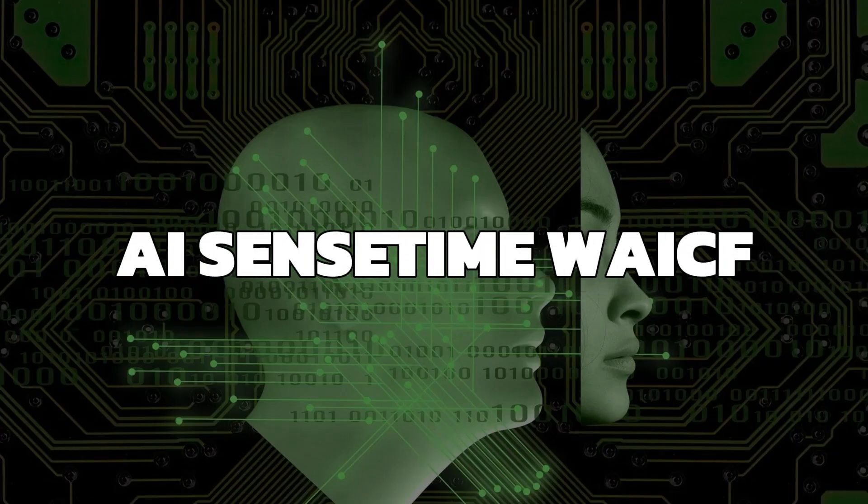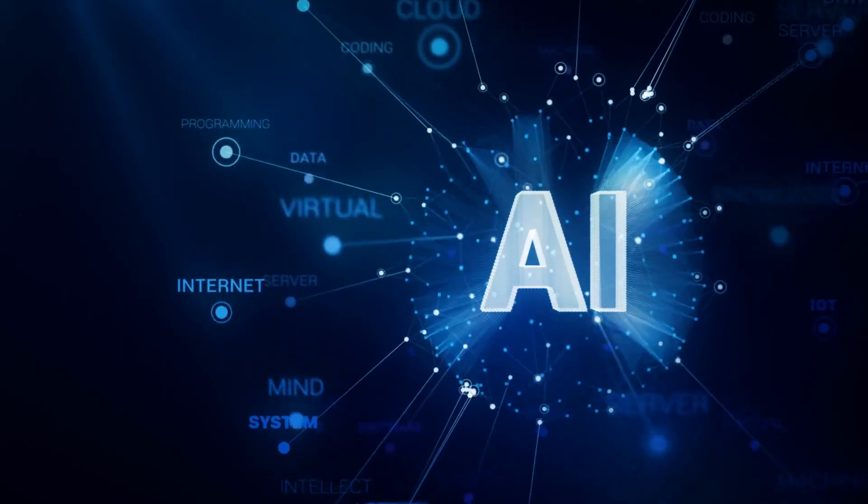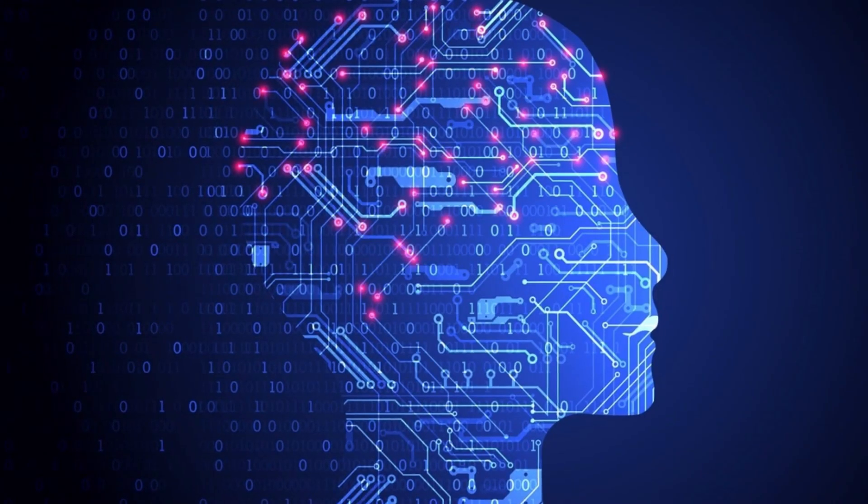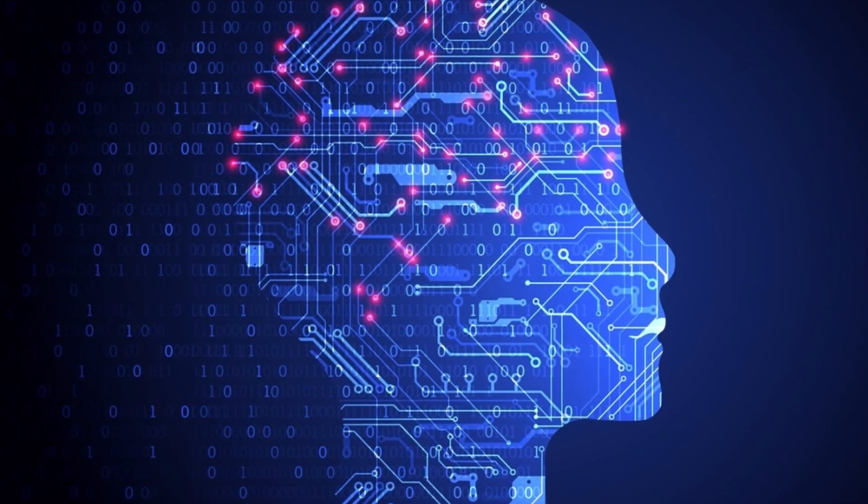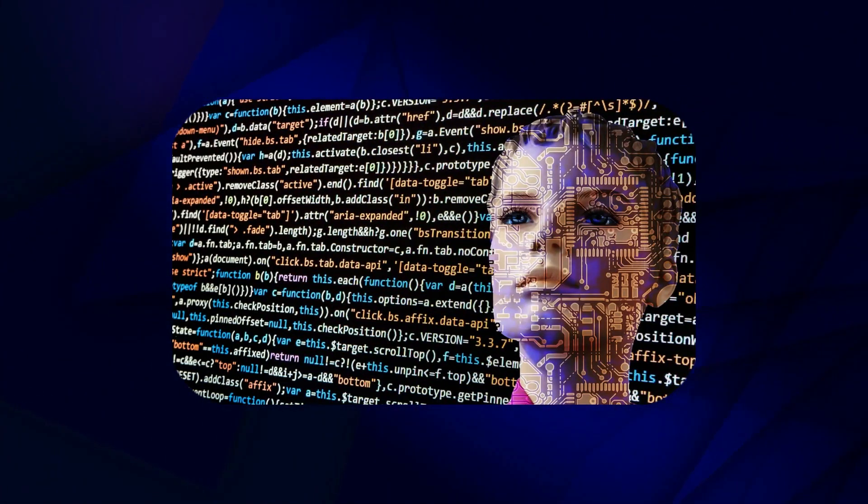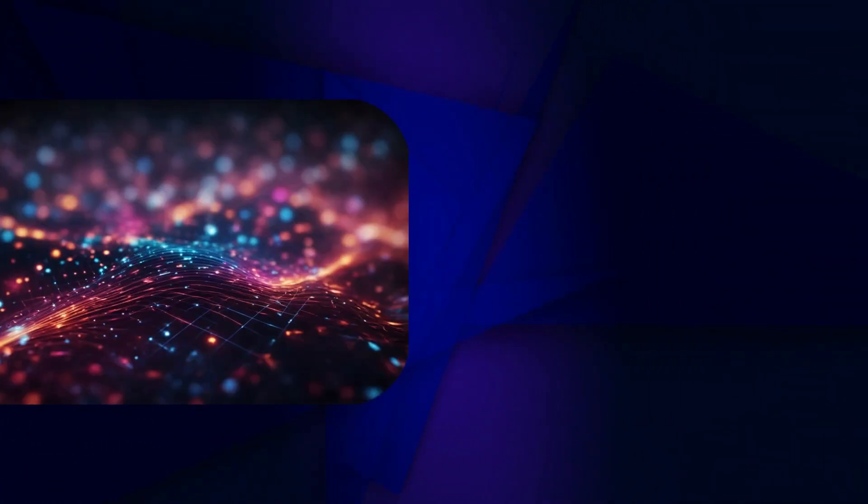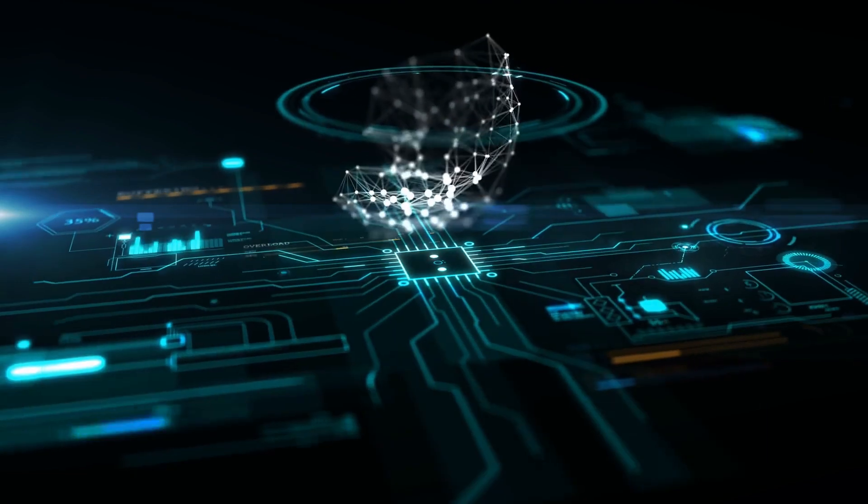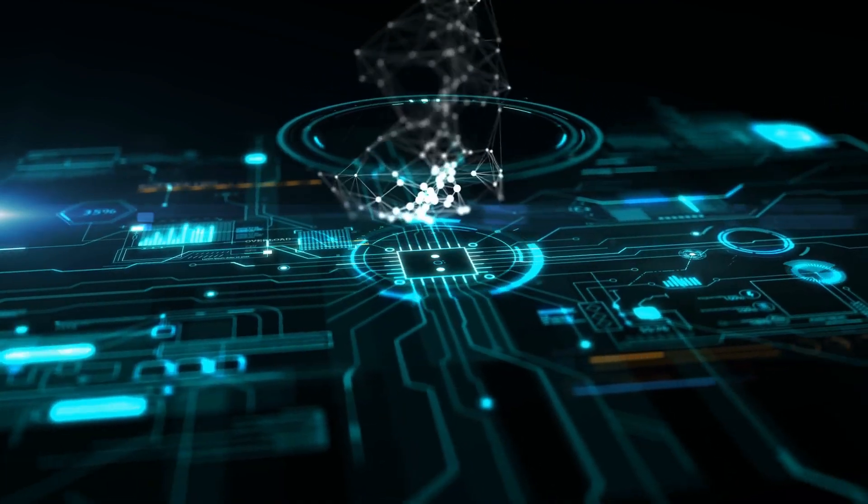AI SenseTime. Artificial intelligence is getting incredibly sophisticated. SenseTime is a Chinese company making waves with its AI algorithms. Their software can analyze faces, images, even translate languages in real time. It raises big questions. Could this make our lives easier and more secure, or lead to greater surveillance and control? Only time will tell how this powerful technology is ultimately used.